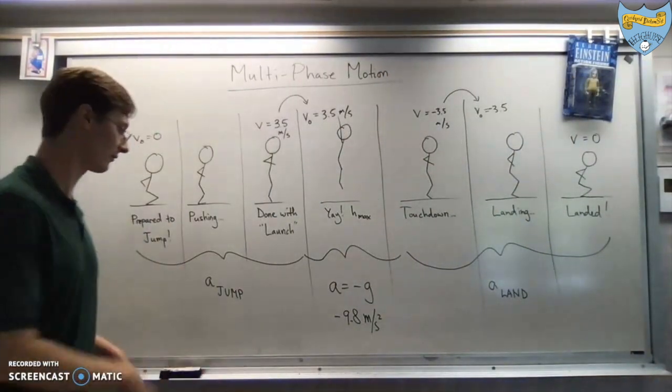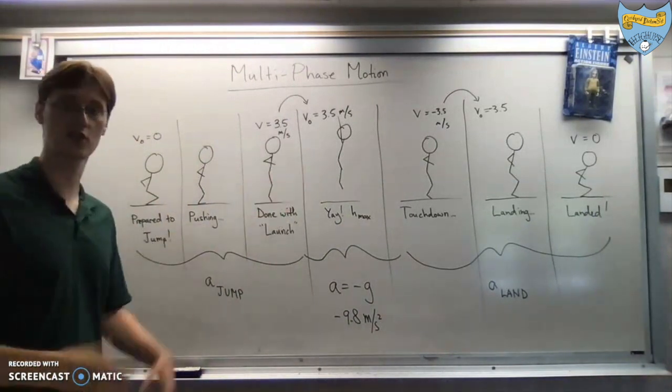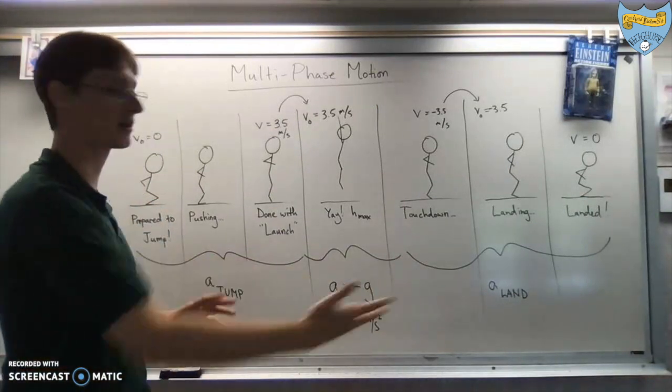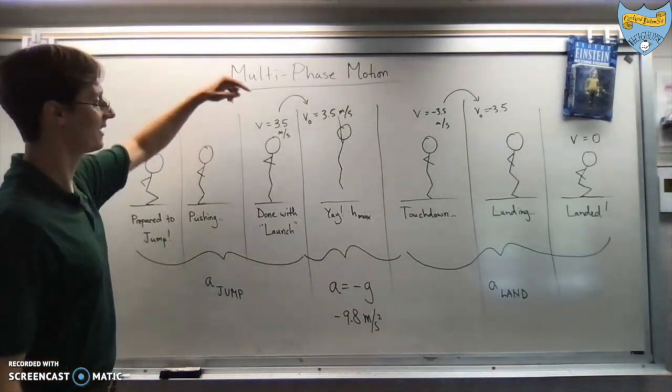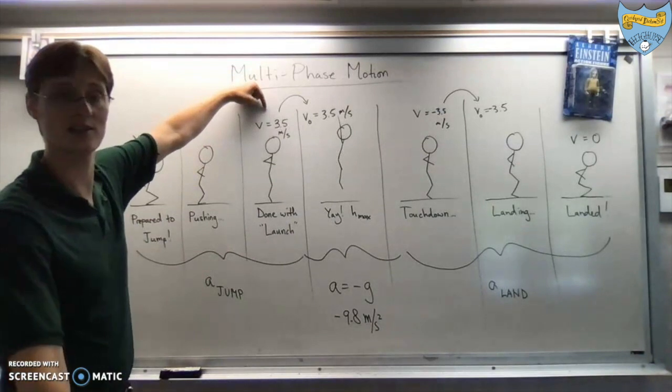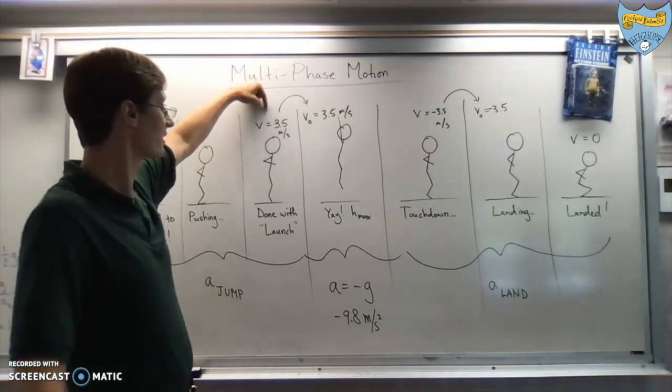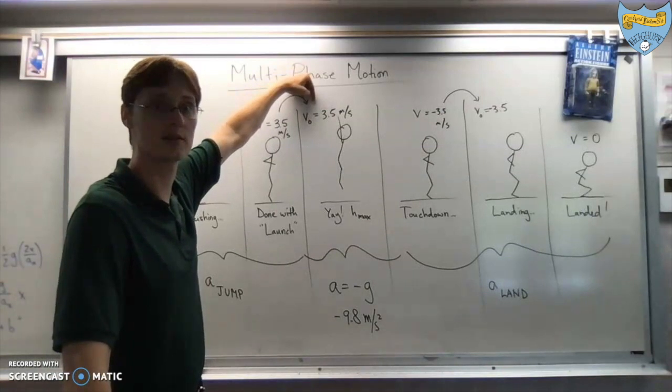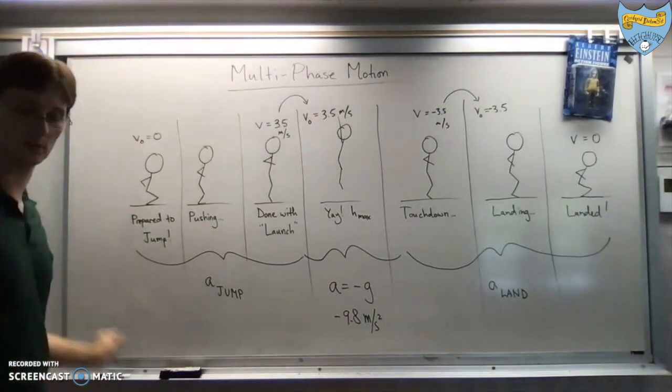So the hallmarks, then, would be you've got an acceleration which changes during the question. During one part, it's one thing. During the next part, it's a different thing. And the final velocity from one part becomes the initial velocity during the next part. All right. Let's look at an actual example.